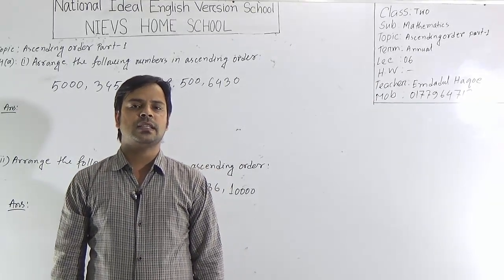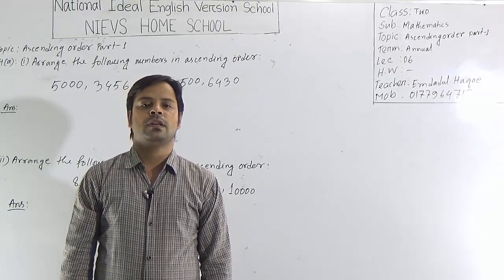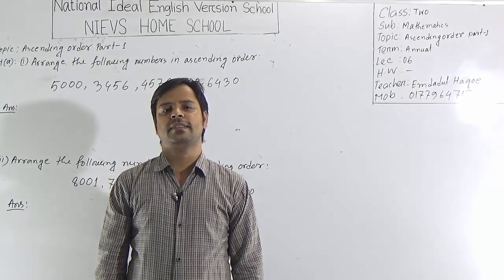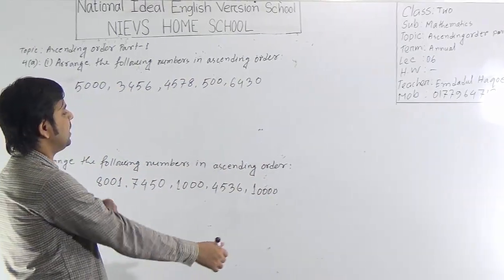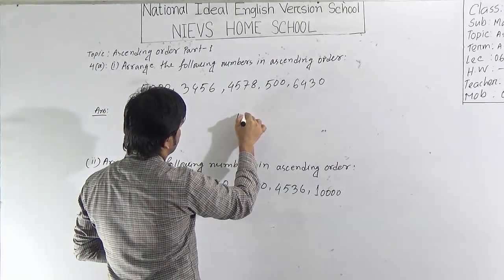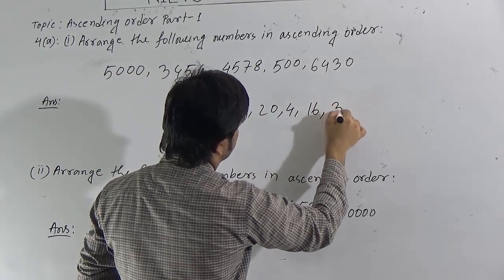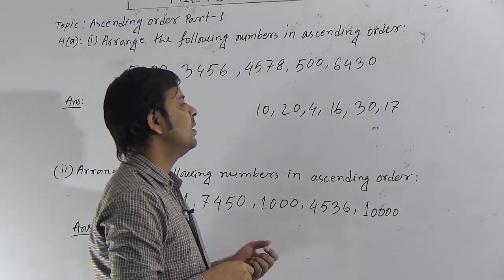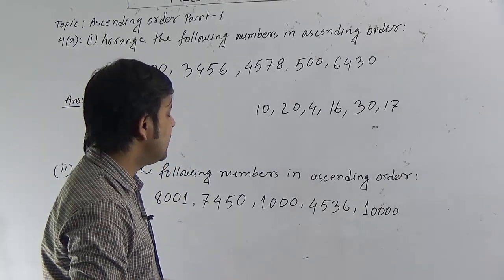Dear students, to solve this item or to arrange the number in ascending order, at first we have to know what is ascending order. Ascending order means smaller to larger — we have to arrange the numbers from smaller to larger. For example, if I write some numbers here: 10, 20, 4, 16, 30, 17 — you have to write these numbers in ascending order.